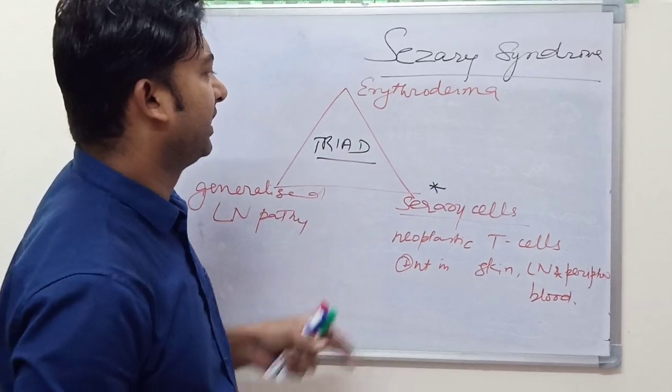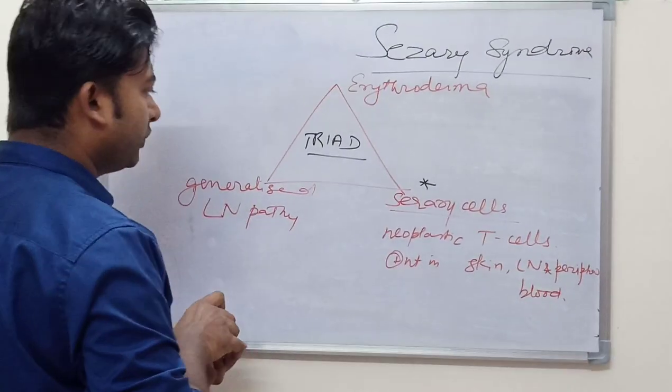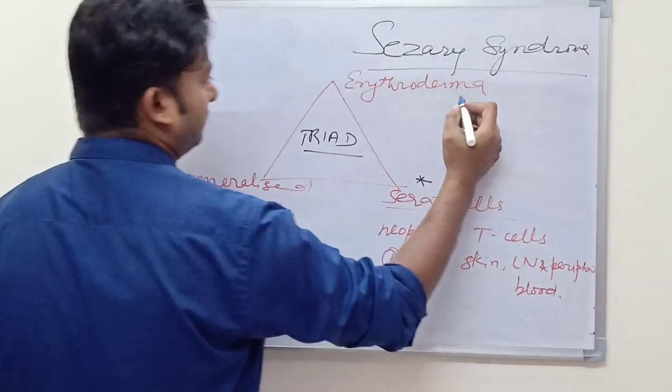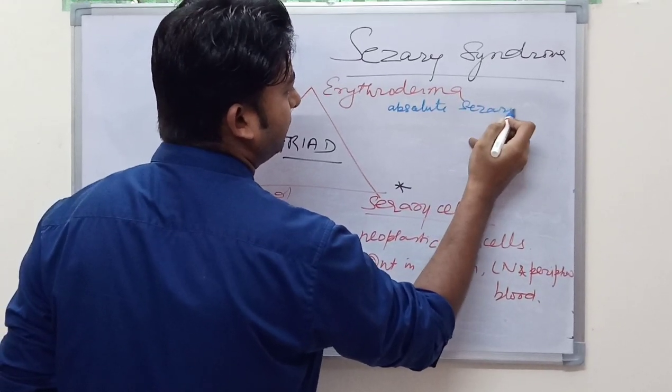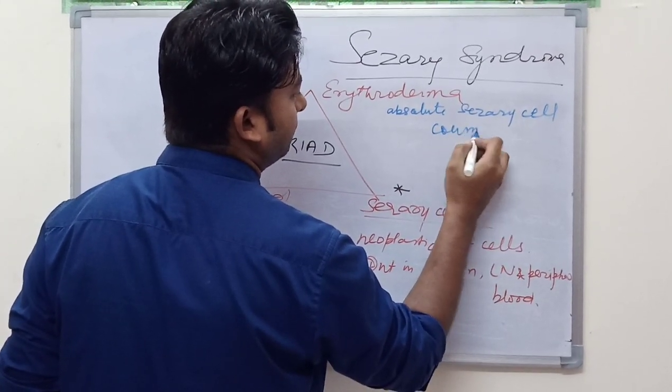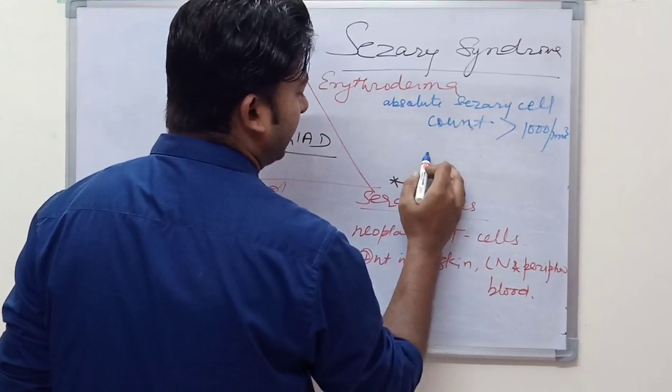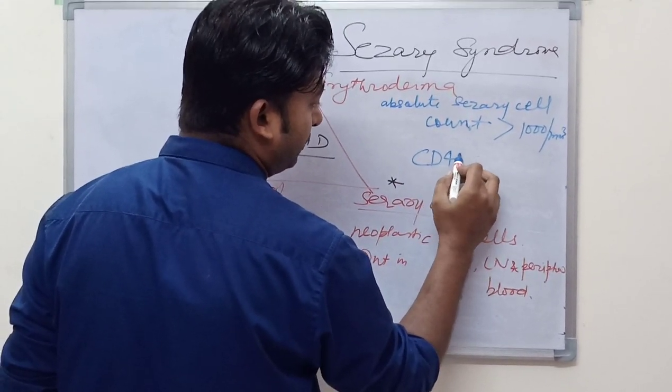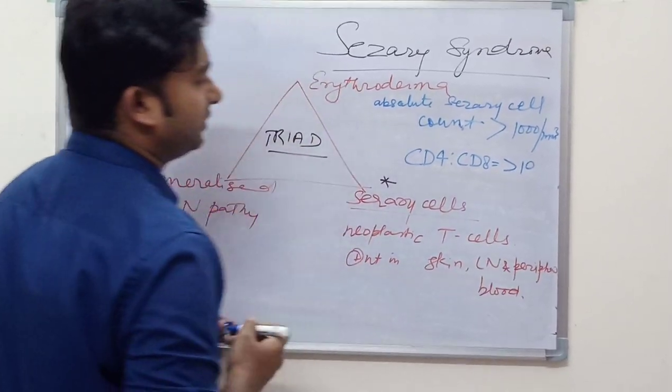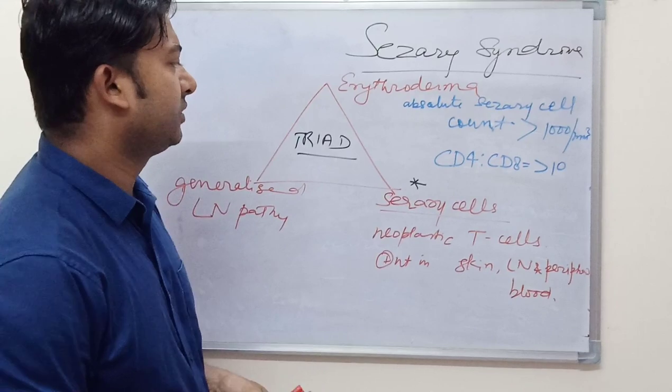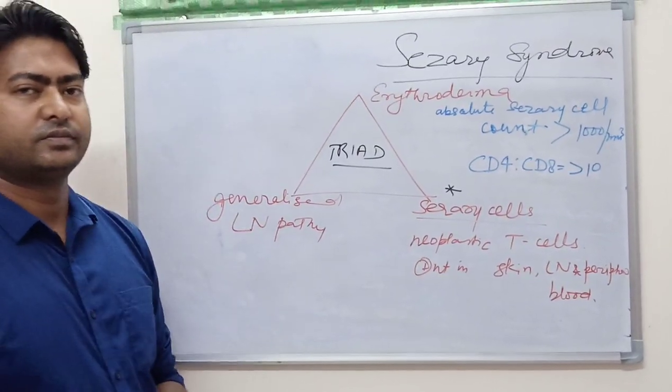WHO defines certain more criteria to define the syndrome. There is absolute Sezary cell count more than 1000 per cubic millimeter. The ratio of CD4 to CD8 should be more than 10, and there should be also loss of T cell antigen.